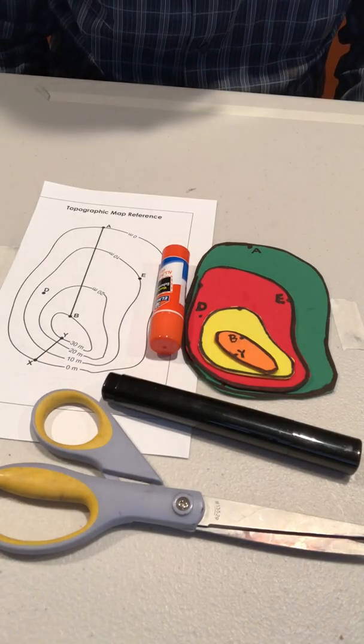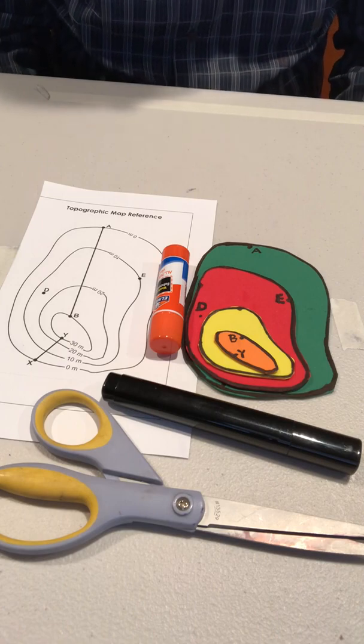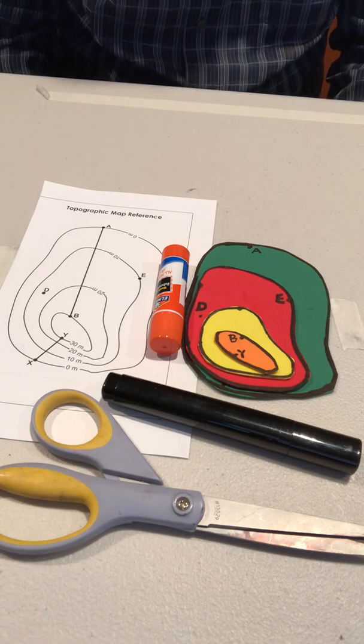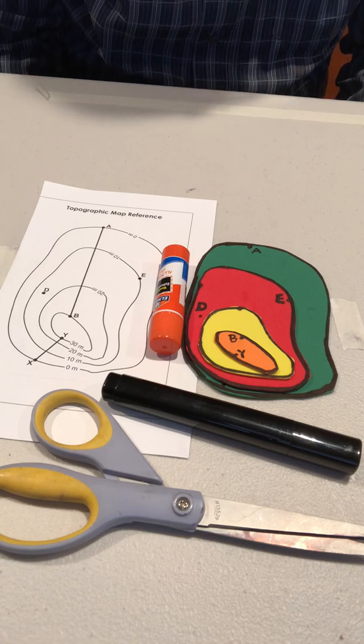Students will compare a three-dimensional model of an island to the island's topographic map so they can interpret how the patterns of the contour lines show the shape of the land. Each student will make a model of the landform.